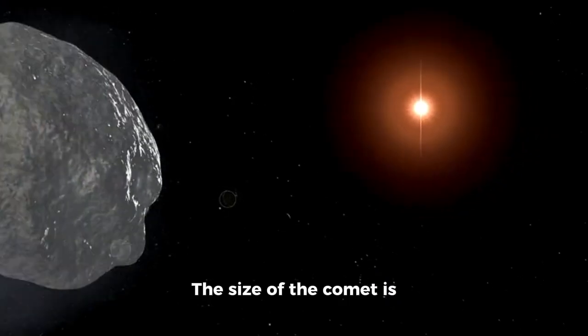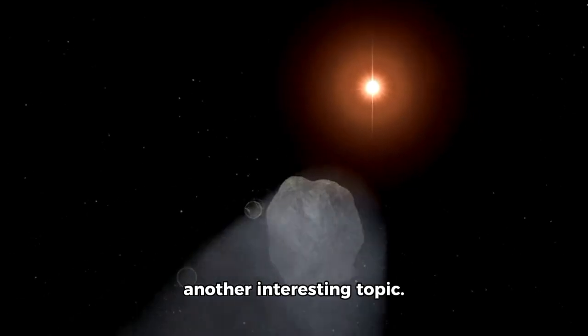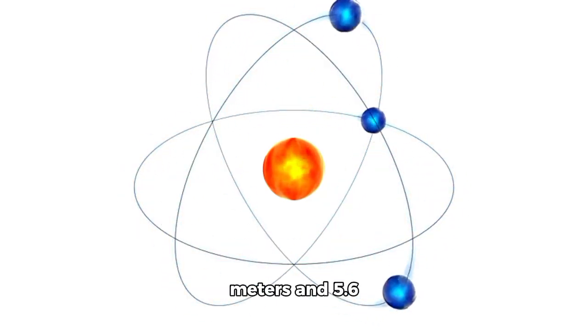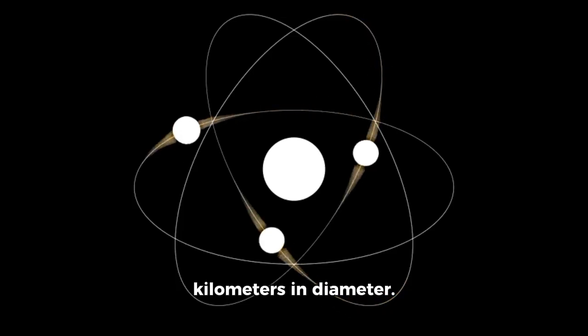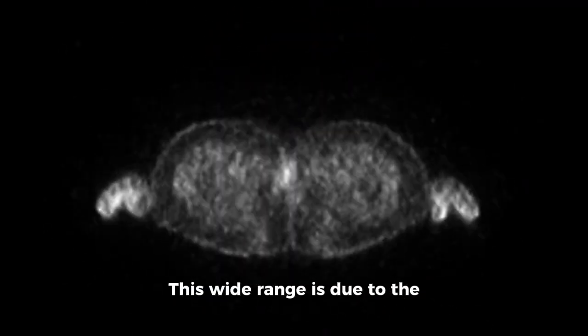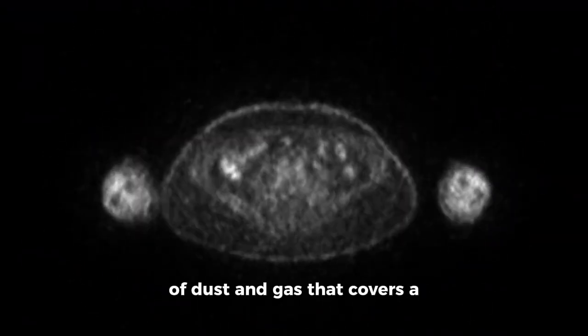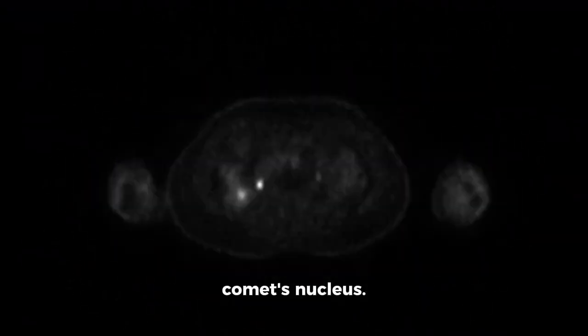The size of the comet is another interesting topic. Estimates suggest that its nucleus could be between 440 meters and 5.6 kilometers in diameter. This wide range is due to the difficulty in distinguishing the nucleus from its surrounding coma, the cloud of dust and gas that covers a comet's nucleus.